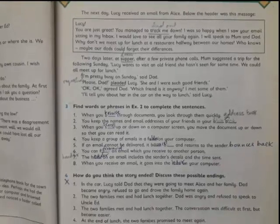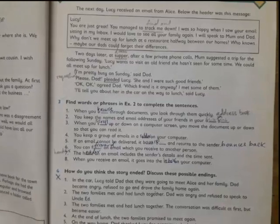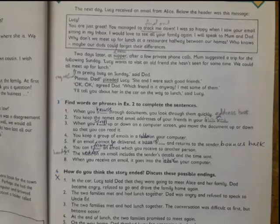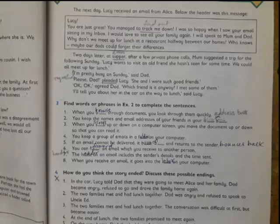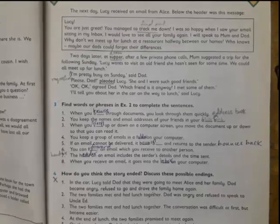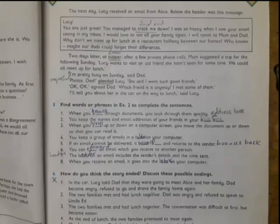Two days later at supper - supper means dinner - after a few private phone calls, Mom suggested a trip for the following Sunday. Lucy wants to visit an old friend she hasn't seen for some time. We could all meet up for a lunch. I'm pretty busy on Sunday, said Dad. Please Dad, pleaded - pleaded means requested - Lucy. She and I were such good friends.